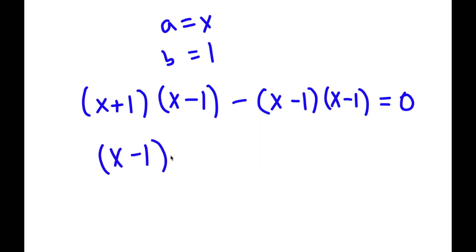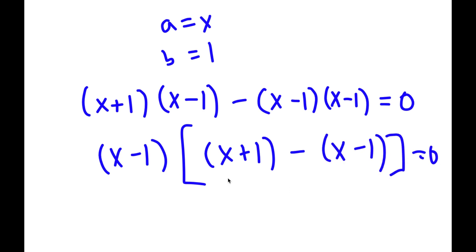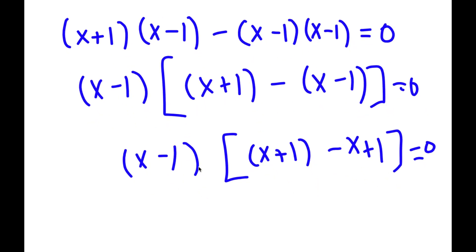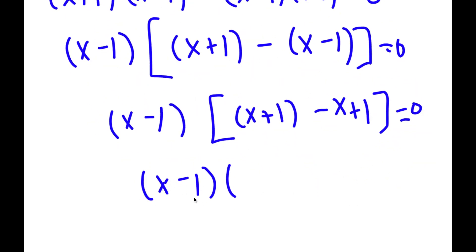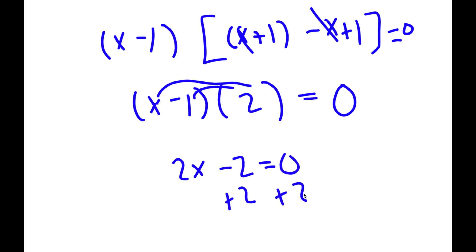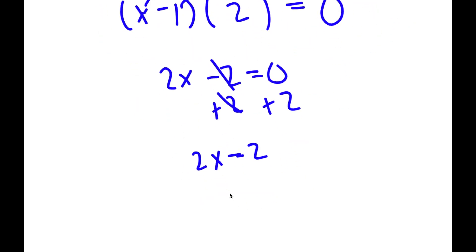Now if I factor out x minus 1, I get x minus 1 times — x plus 1 times x minus 1 divided by x minus 1 is simply x plus 1, and minus x minus 1 times x minus 1 divided by x minus 1 is simply x minus 1 — is equal to 0. This simplifies to x minus 1 times x plus 1 minus x plus 1, where x and negative x cancel, leaving 2, is equal to 0. Distributing gives 2x minus 2 equals 0, so adding 2 on both sides gives 2x equals 2, meaning x equals 1.